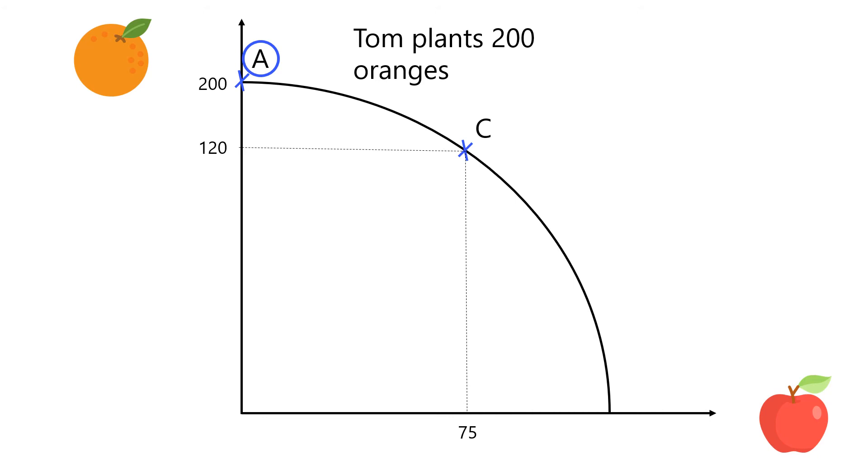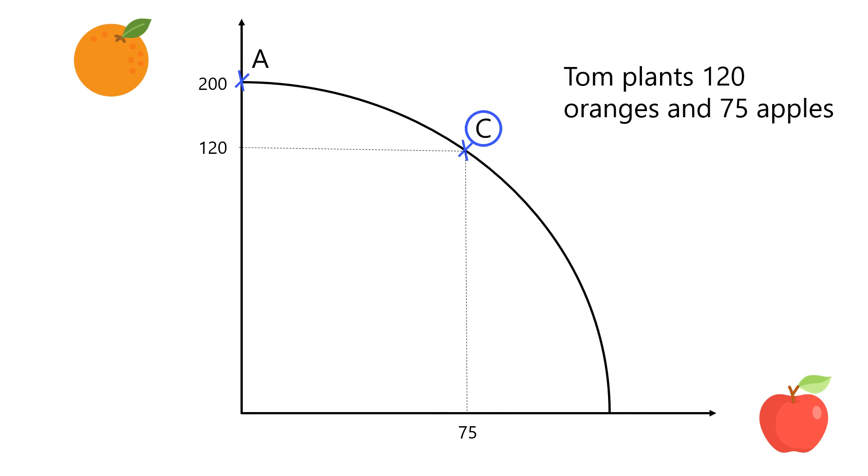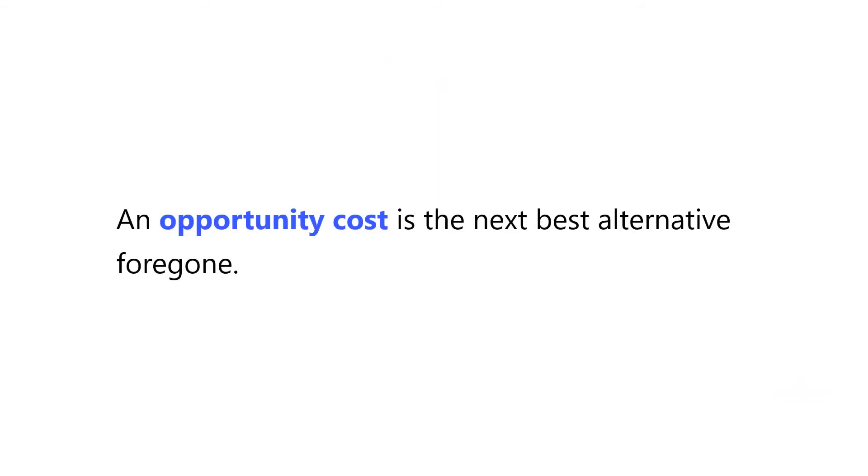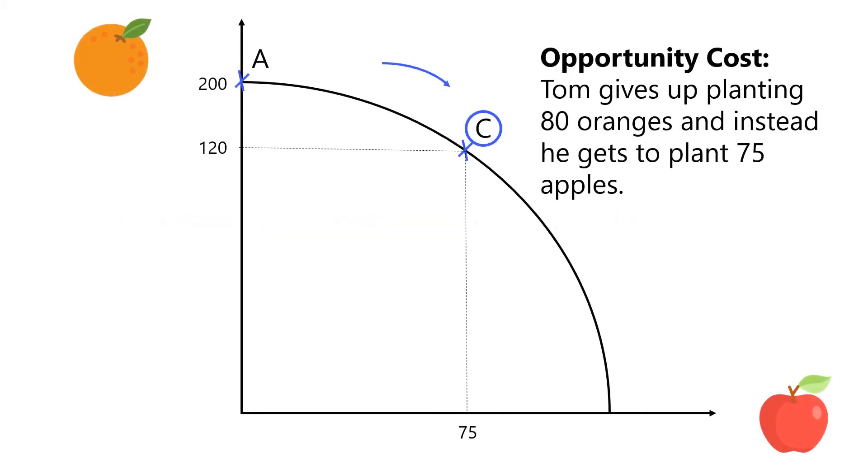Firstly, there is a shift of factors of production from planting the oranges, such as manpower and land, to plant apples instead. This increase in resources dedicated to planting apples results in Tom incurring an Opportunity Cost. An Opportunity Cost is the next best alternative foregone. Tom gives up planting 80 oranges and instead he gets to plant 75 apples.